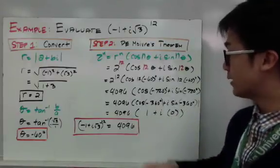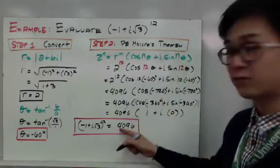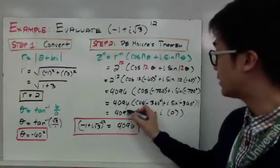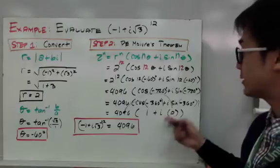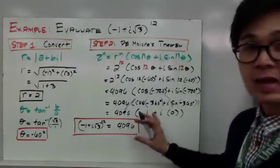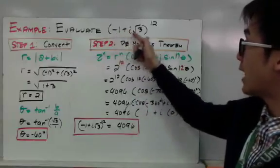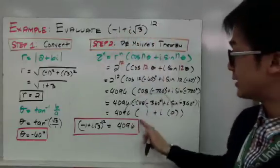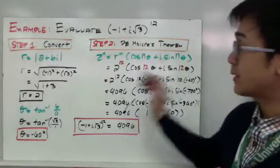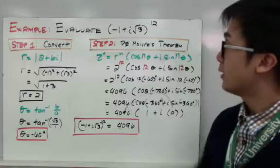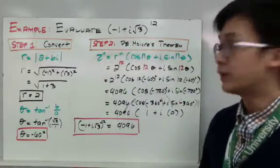By the distributive property, distributing 4096 to 1 gives 4096, and distributing 4096 to 0 gives 0, so we eliminate the imaginary number. Therefore, negative 1 plus i square root of 3 raised to the 12th power is simply equal to 4096. These are the steps we will use in solving or simplifying a complex number raised to a power.